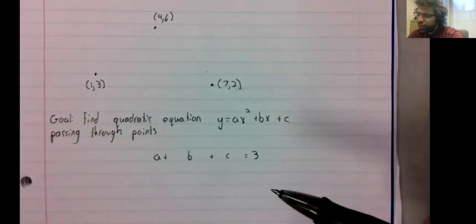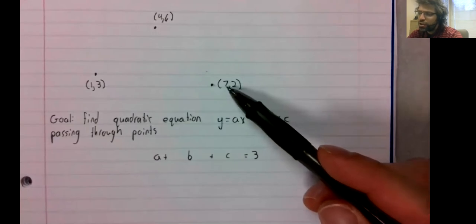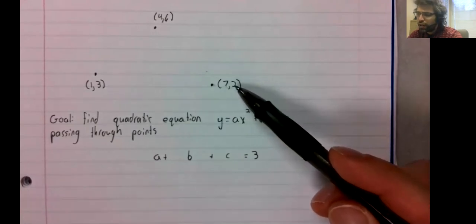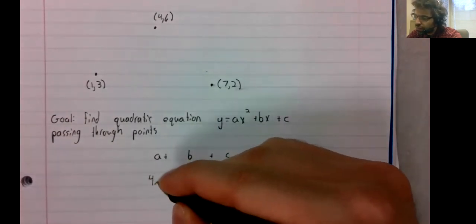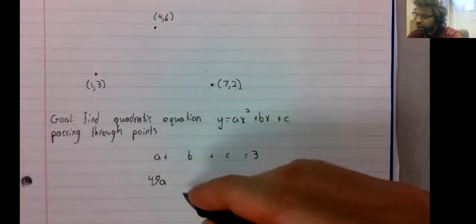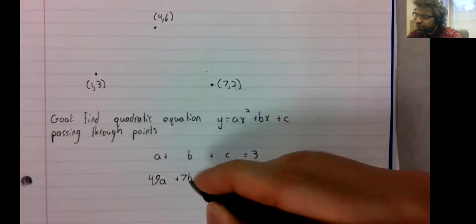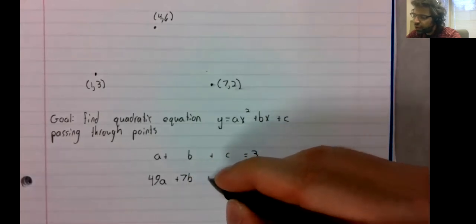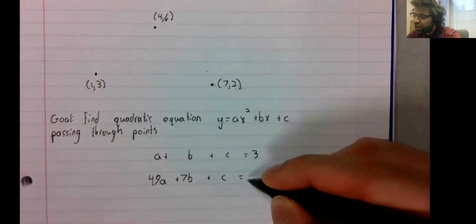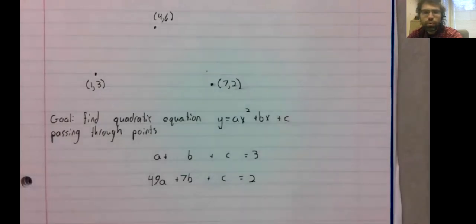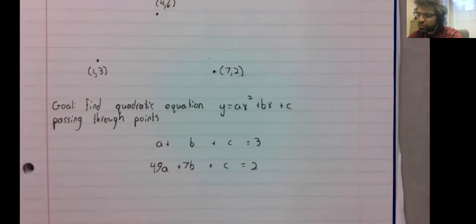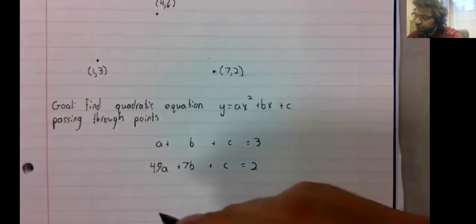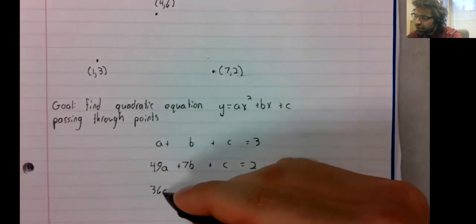If we plug x equals seven, y equals two into this. And if we plug x equals four, y equals six into this, we get 36a plus 7b plus c equals two.